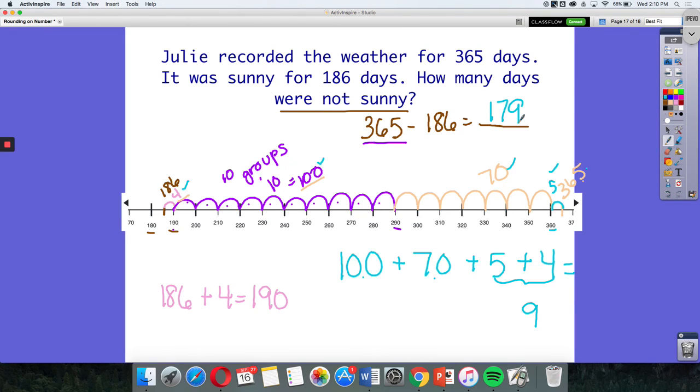So that's how you can use an open number line to add on to subtract. Find what works best for you. Some of you might be able to have made this hop of four and made one big jump of 100 and that's okay. Whatever is easiest for you to understand and whatever numbers are easiest for you to work with. That's what we want you to use.